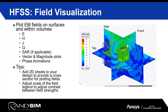A couple of quick modeling tips for this workflow: adding 2D sheets inside your design allows you to create cross sections for plotting fields. Here I've created a top cross section, a side view, and a front view. The scale is also user-customizable so you can clearly see how much field is inside versus outside the enclosure, adjusting the scale to improve visualization as needed.